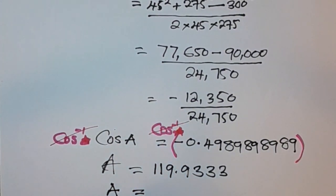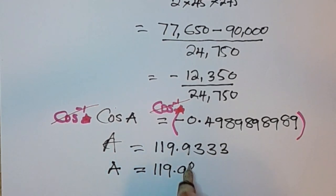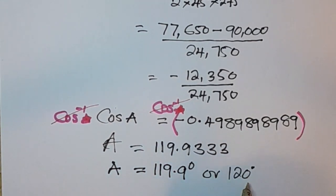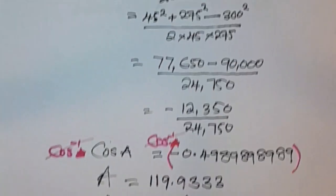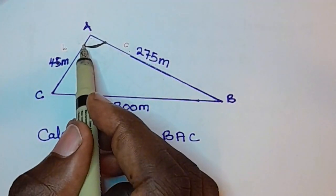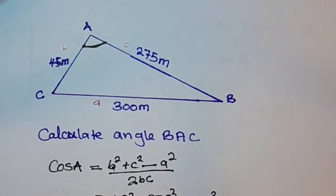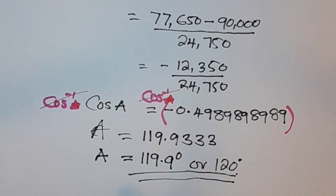So angle A equals approximately 119.9 degrees, or rounding to the nearest whole number, 120 degrees. Coming back to the triangle, this makes sense because the angle visually looks like an obtuse angle, and 119 or 120 degrees is indeed obtuse.